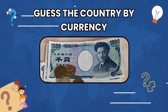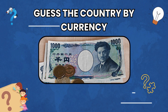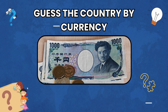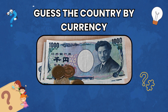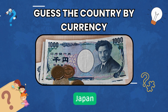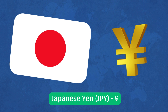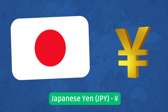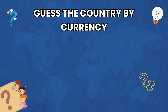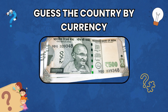Can you guess which country this currency belongs to? Japan! The symbol of Japan's currency is the yen sign. Great job — take a good look and guess which country uses this currency.